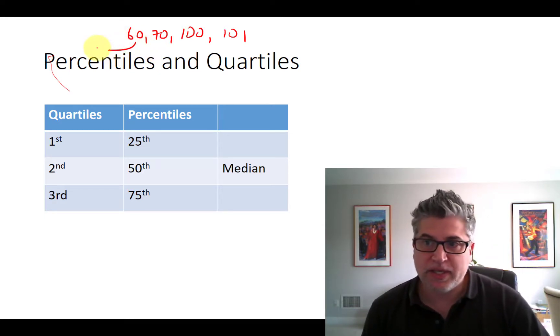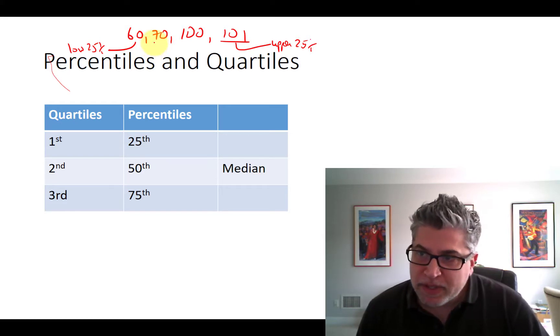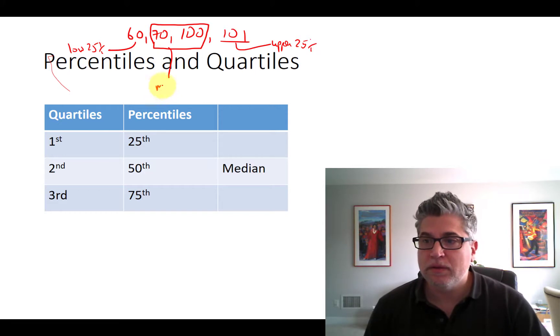This person is the bottom fourth or the low 25 percent. This person right here is the upper 25 percent. These people in the middle account for the middle 50 percent.